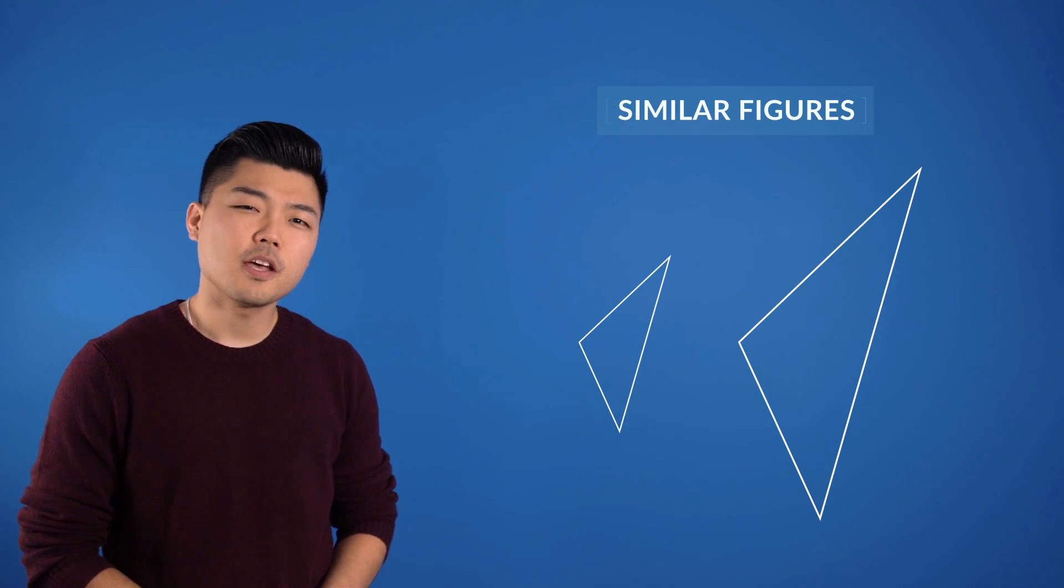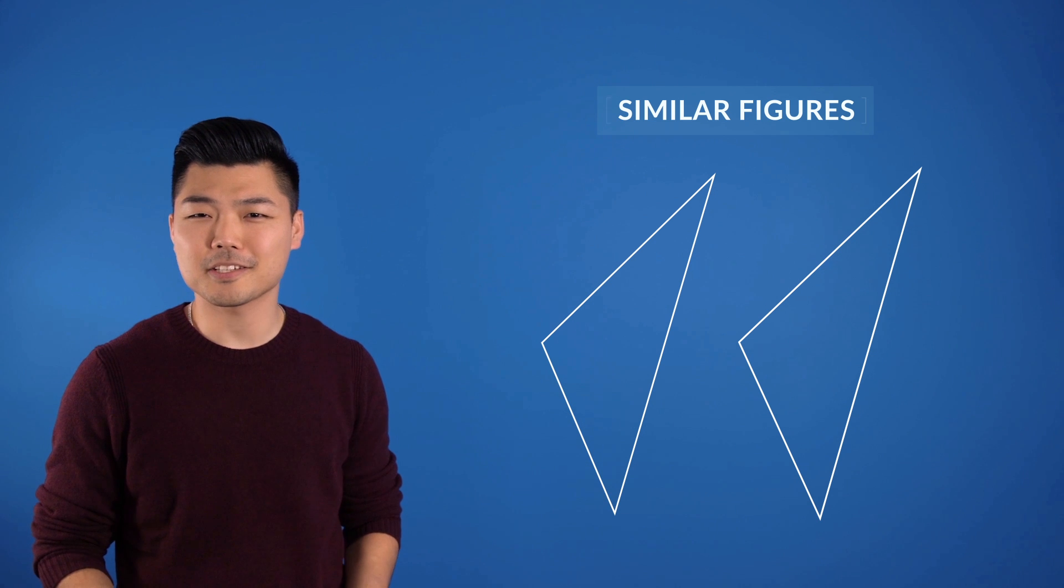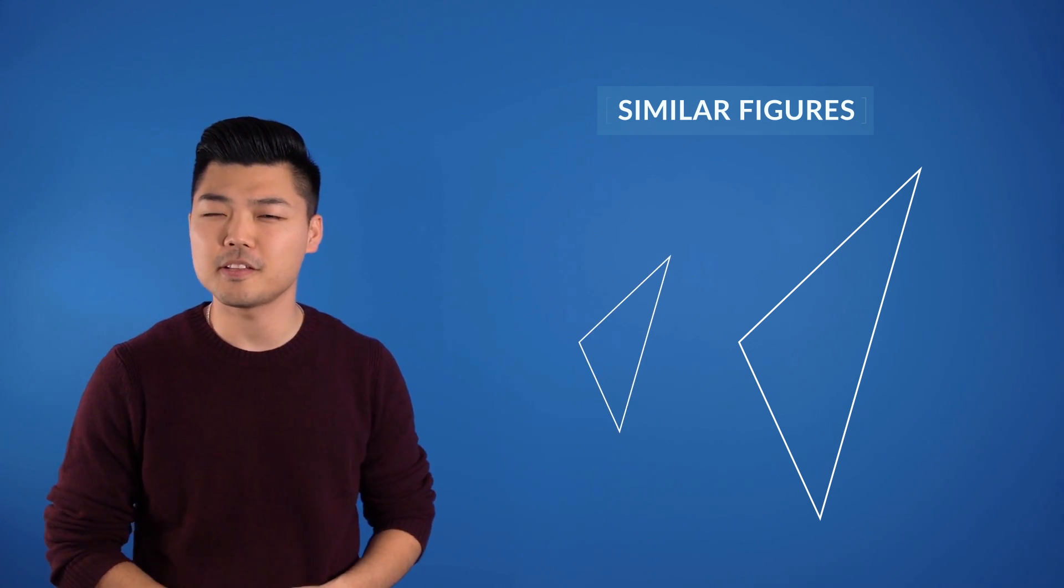But now, let's take a look at these two triangles. These are not congruent. No, instead we would call these similar figures in that the shapes look identical but different in size.